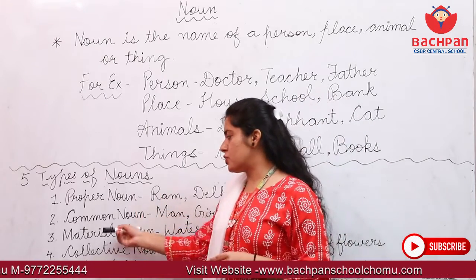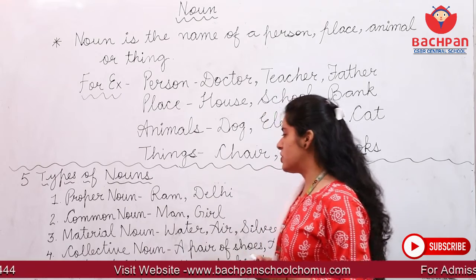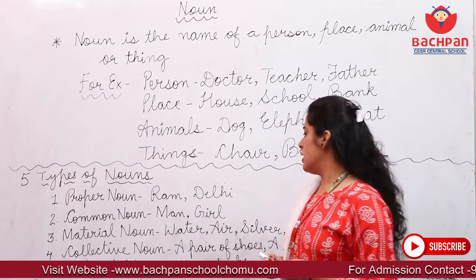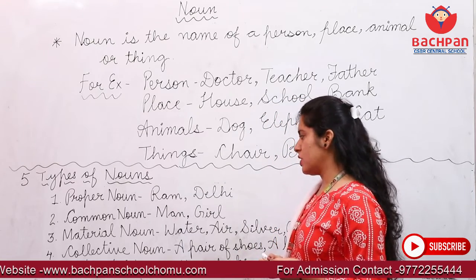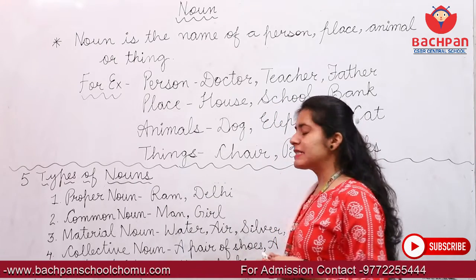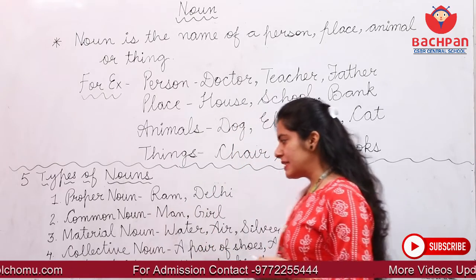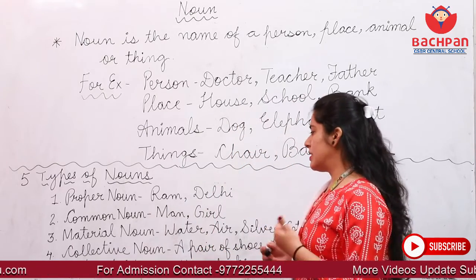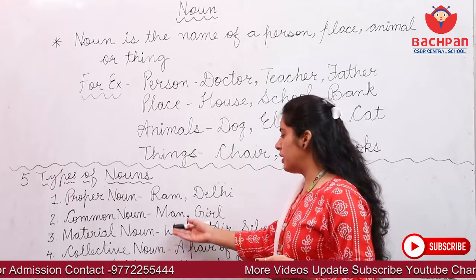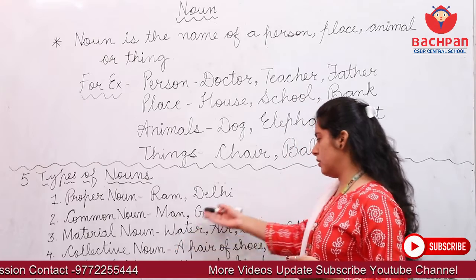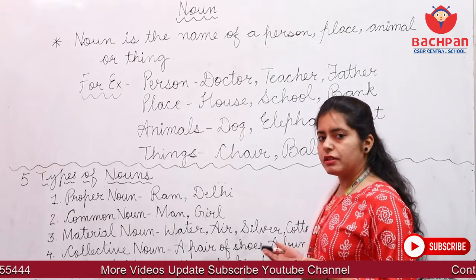Let's move on to the next noun, which is Material Noun. Material Noun is the one that tells us about any substance, which things are made of. For example: water, air, silver, cotton.